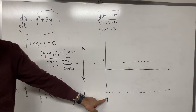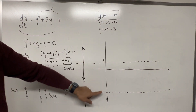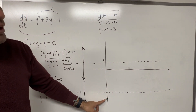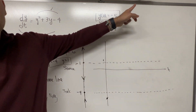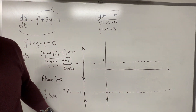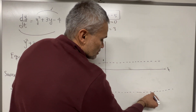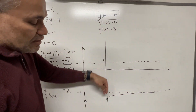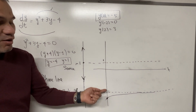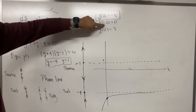The solution y(0) = -5 goes through the point (0, -5). The value -5 is in the first piece of the phase line, and the arrow goes up, meaning the function is increasing. Since it cannot cross the equilibrium solution y = -4, it goes asymptotically to y = -4 as t → ∞. In the other direction (t → -∞), there are no equilibrium points below -4, so the solution goes to negative infinity.